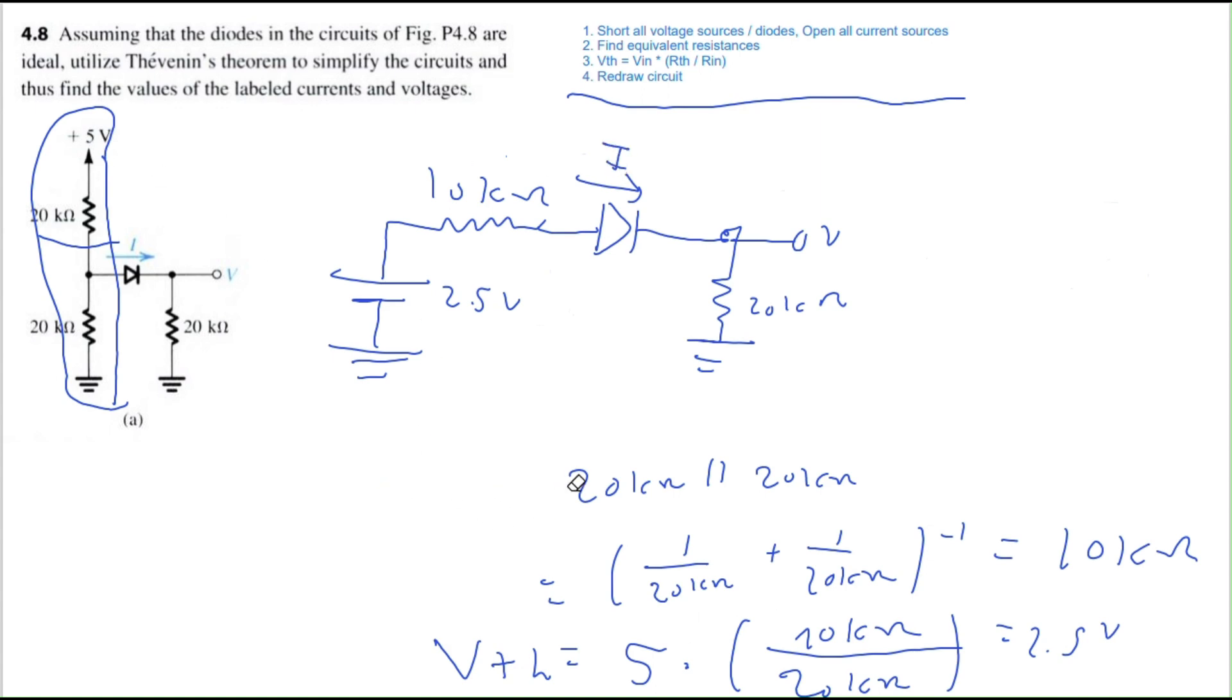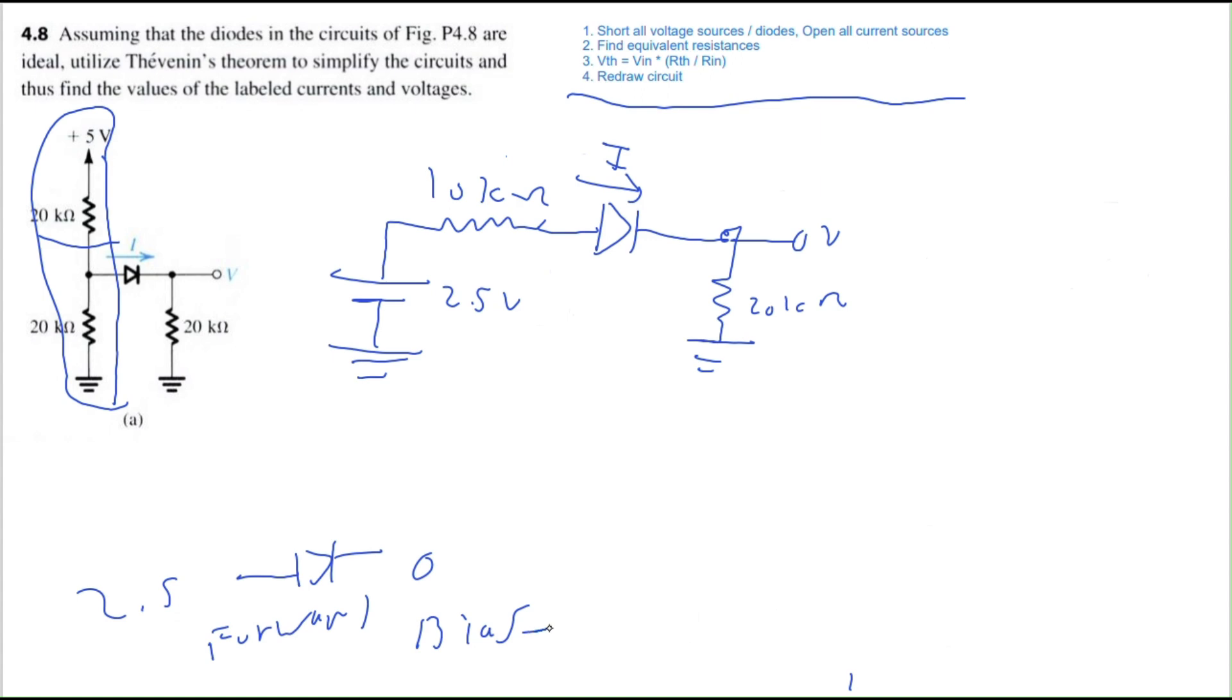Now this becomes just a normal ideal diode analysis problem. You need to determine if the diode is forward biased or reverse biased. Take a look at the voltage coming into the anode and exiting the cathode. Entering the anode we have 2.5 volts and exiting we have zero volts because we can see that resistor is grounded. So we have 2.5 to zero, high to low. Therefore this diode is conducting in the forward biased region and it's going to act like a short circuit.